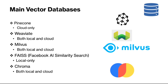Some popular vector databases are included in this slide, including Pinecone, Weaviate, Milvus, FAISS or Facebook AI Similarity Search, and Chroma. Some of these provide cloud-only support, whereas others provide both cloud and local deployment. In this video, we will use Milvus as it is open source and very easy to install and use locally.